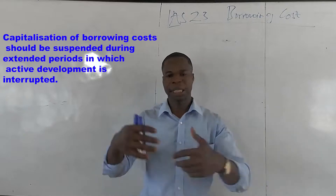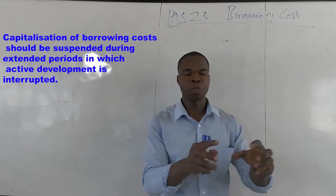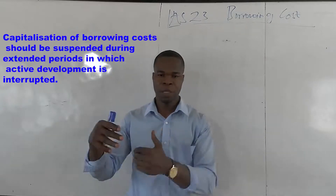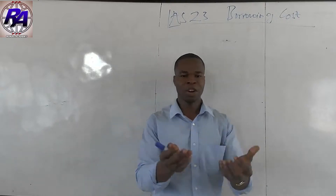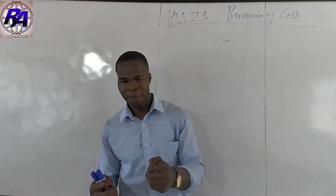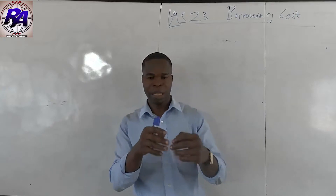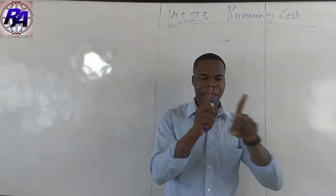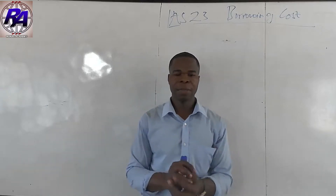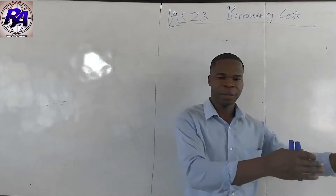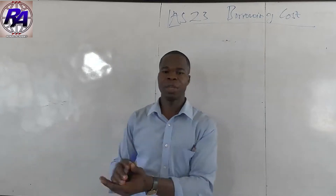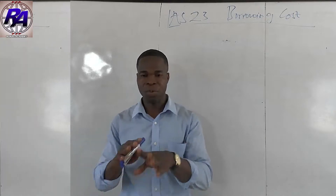During the period of interruption, when active development is interrupted, borrowing costs should be suspended for that period. For instance, if we are constructing an asset from January 2019 to December 2019, and in August there was an interruption in active development, then the borrowing costs for August should be excluded and expensed directly in the P&L account. Any borrowing costs not directly attributed to the construction, acquisition, or production of a qualifying asset must be expensed in the P&L account.